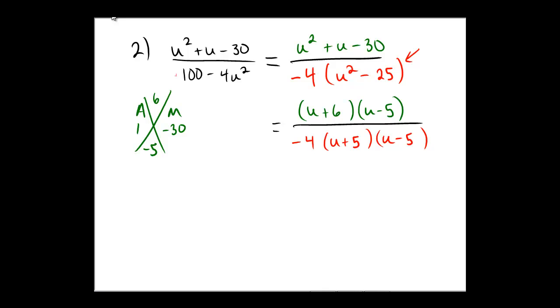Notice any reduction? I sure do. (u - 5) and (u - 5) cancel out. And therefore, in the numerator, we're left with (u + 6). The denominator has a 4 times (u + 5). And finally, that negative sign that's in the bottom but not in the top, I'm going to pull out in front for politeness sake. I just like the way this one looks better. And there's your final answer.